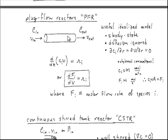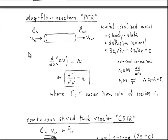Diffusion in the radial direction is ignored, and diffusion in the axial direction is ignored. That means derivatives with respect to R and with respect to Z can both be ignored, as can derivatives of the velocity with respect to those variables. So when we operate this at steady state, we find that the only term left from the species balance equation involves derivatives with respect to position down the reactor.